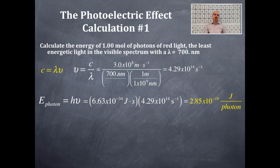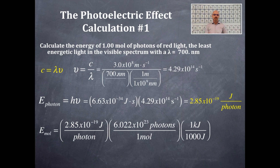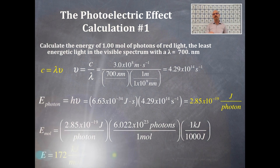Now we calculate the energy per one mole of photons. We take the energy per photon and multiply by Avogadro's number to cancel out the photons so that we have per mole. We also convert to kilojoules, because otherwise the number is too large to be intuitive.